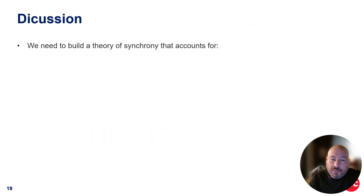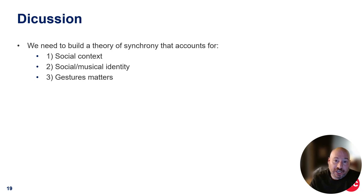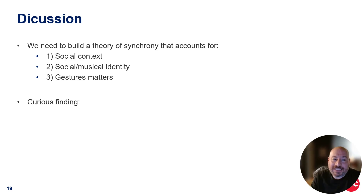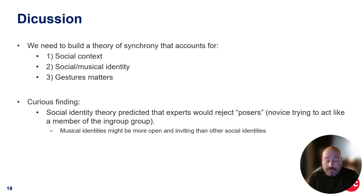So in summary, as we start to think through building larger theories of synchrony — especially with the growing interest in social mechanisms — we need to think carefully about the social context in which we do these studies. We need to think about the social and musical identities of those individuals involved. Bringing random strangers may not always be a good idea, or we should at least try to connect them through some shared identity when we have them do these tasks. And the gesture they do matters — we should stop relying on just finger tapping, rocking chairs, and circle drawing, and actually move into gestures that make sense given the musical context. There's also a curious finding that social identity theory had a clear prediction about what should happen in terms of experts rejecting posers — and that's not what happened. Posers were not rejected; in fact, people who identified as high in hard rock identity were more open and accepting of even the novice when they were performing weird gestures.